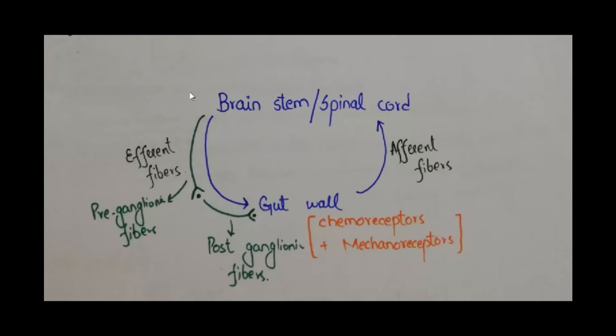Now let us take a look into this small diagram to get our concepts further clear. Whenever some change occurs in the wall of the gut, the chemoreceptors and mechanoreceptors take that information and send it to the spinal cord or brainstem through afferent fibers.